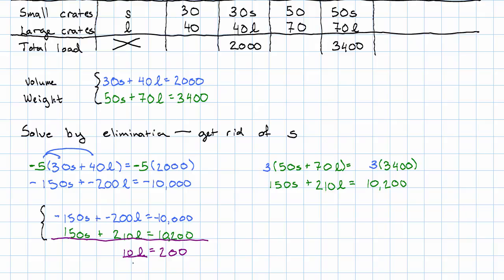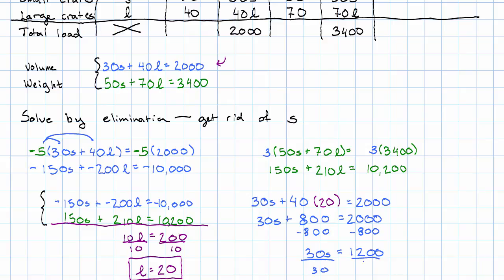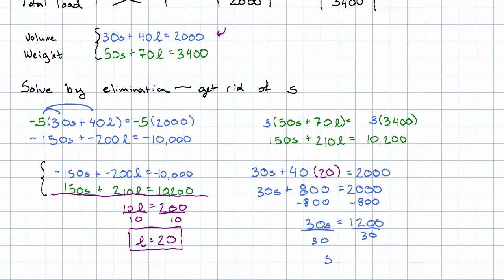Hey, that's pretty good. Divide both sides by 10, and we have L equals 20. To find the other variable, then, we go back to whichever one of our original equations we like better. I'm going to pick this first one: 30S plus 40 times L is 20 is 2,000. So 30S plus 800 is 2,000. Subtract 800 on both sides, 30S is 1,200. Divide both sides by 30, and we get S is 40.